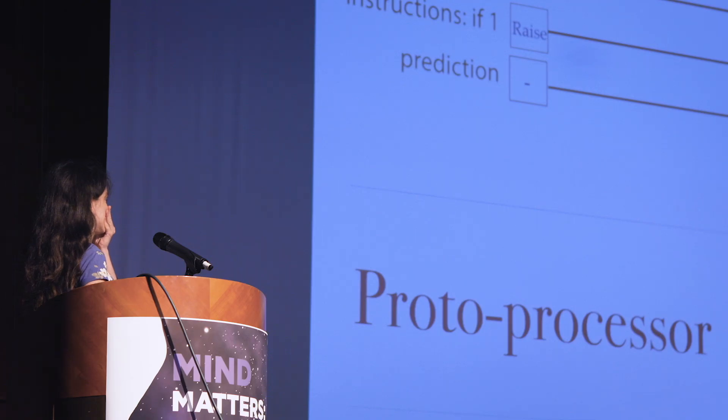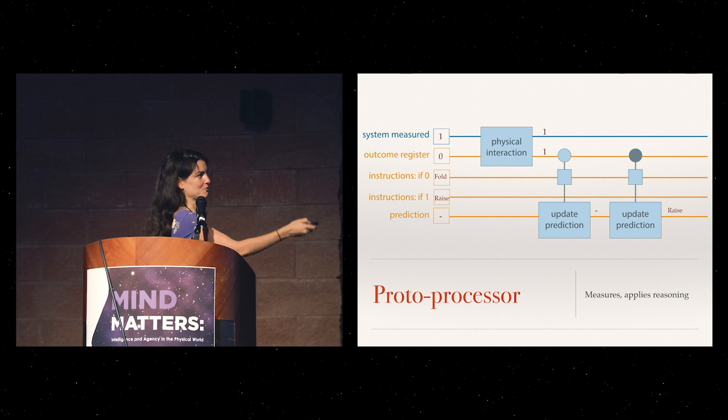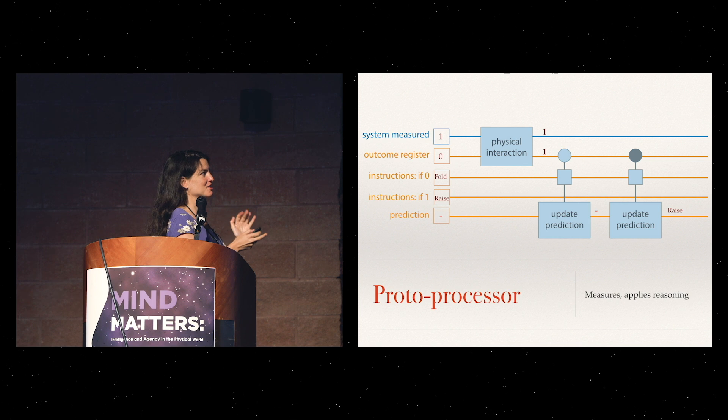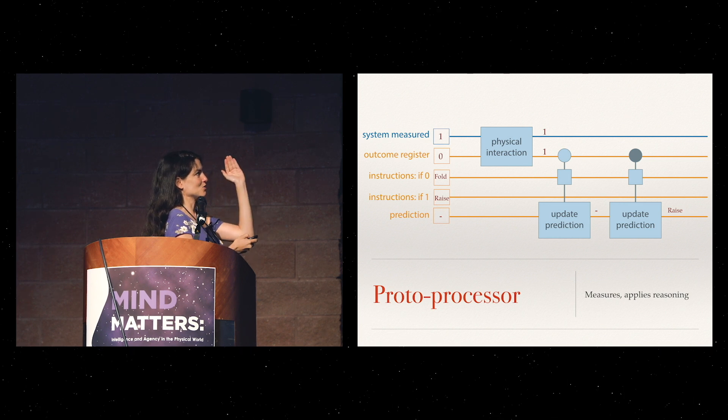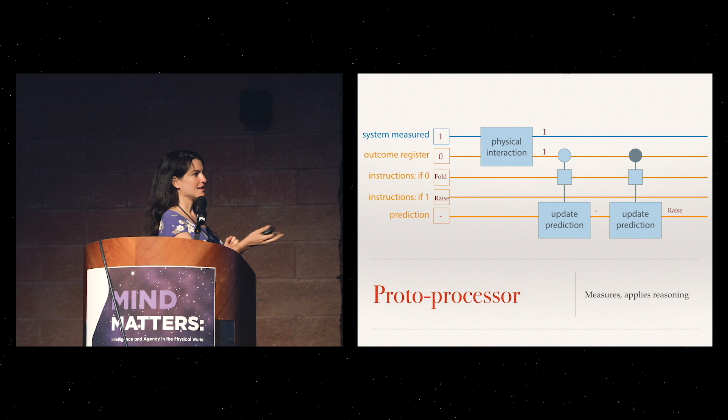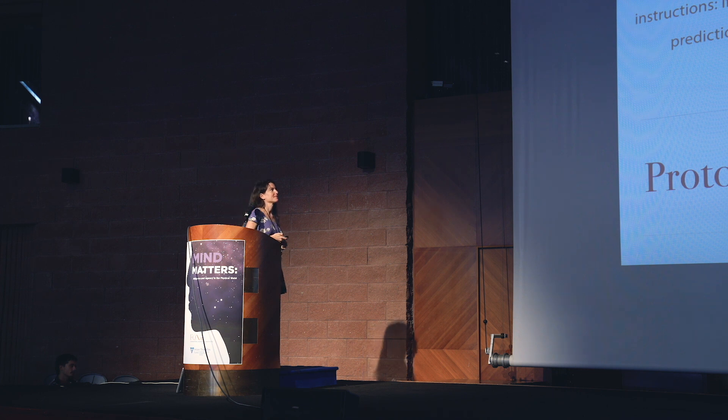The idea is that if now we're playing a slightly different game, where maybe you raise if you see a zero or you fold if you see a one, then you just have to change the way you initialize these conditions here. But the physical mechanism is all the same. So we can say an agent for this very simple situation is someone that reasons in this way via this physical evolution. Everything that has to do with common knowledge and with the reasoning and the logic that the agents use to make a prediction, this can be all encoded in these initial instructions here. So this is what we'll use later.